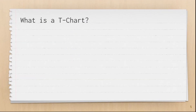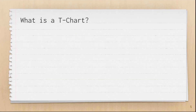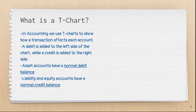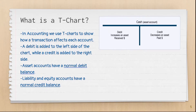Now, what is a t-chart? In accounting, we use t-charts to show how a transaction affects each account. For example, take the cash account, which is a normal asset. For all normal assets, a debit causes them to increase and a credit causes them to decrease.